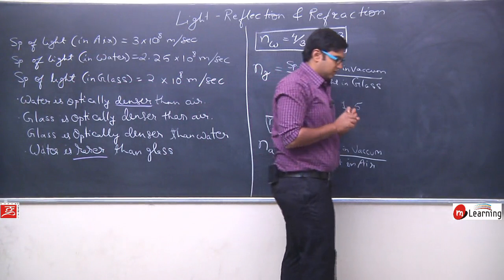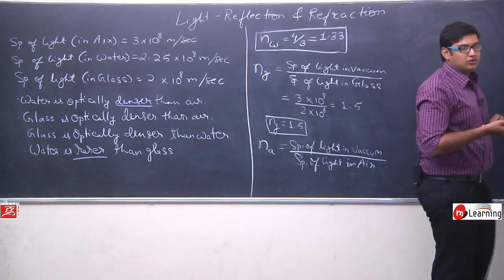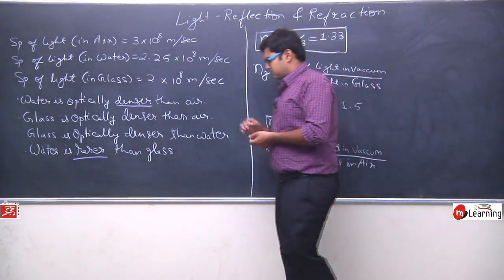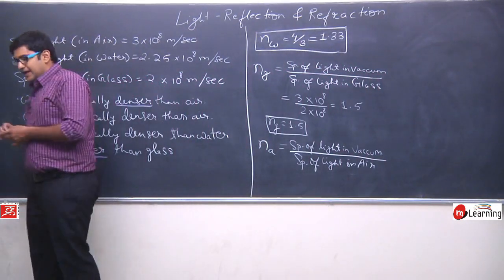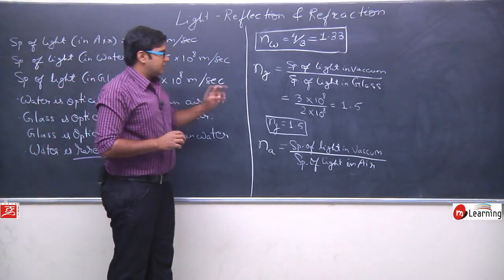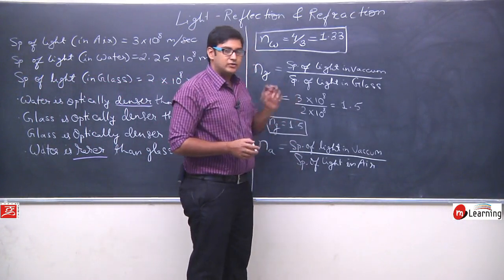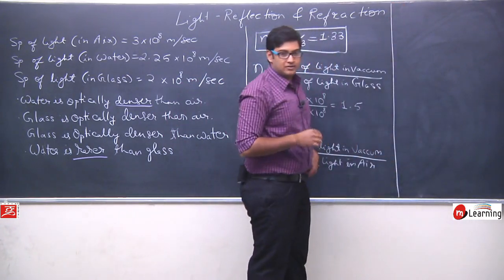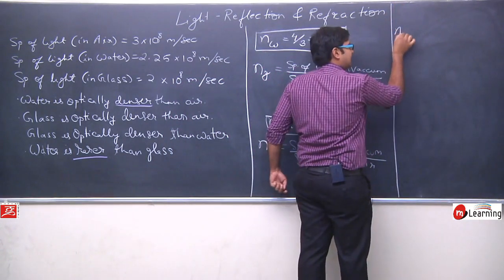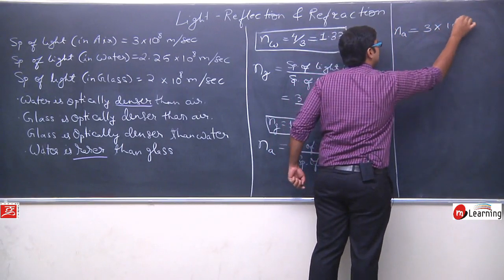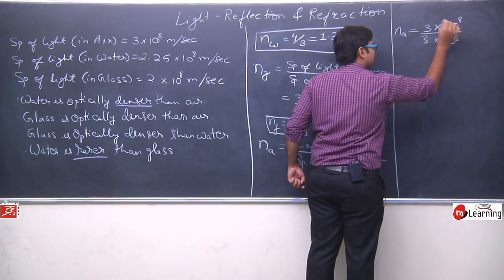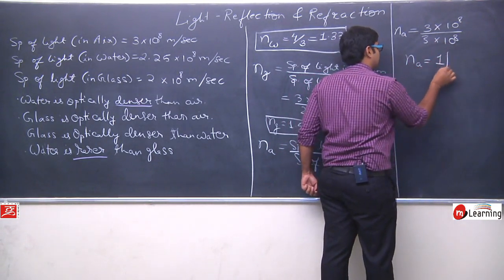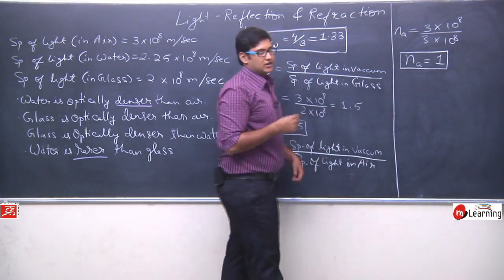Ab humhye aisa by default maanna hai ki jo air hota hai aur vacuum hota hai, ye bilkul same hai — is mein koi antar nahi hai. Light ki speed mein koi bhi zyada antar nahi aata. Vacuum mein maan lijiye light ki speed 3 into 10 to the power 8 hai aur air mein hogi 2.9 into 10 to the power 8 — hardly 0.1 ka difference. So I can say vacuum mein bhi aur air mein bhi light ki speed is 3 into 10 to the power 8. NA = 3×10⁸ divided by 3×10⁸, cancel kar dijiye and NA is equals to 1 — refractive index of air is equals to 1.